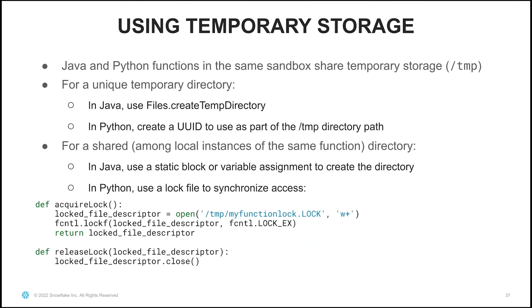Now a note on using temporary storage from Java and Python UDFs. As mentioned previously, the sandbox prevents local file system access, but we do allow access to temporary storage. If you want to have files for working content of your UDFs, you can write them to the temp directory. For Java UDFs, if you want a unique temporary directory, you can use Files.createTempDirectory. In Python, you can also create a temp directory, or create a UUID to use as part of the temp directory path. If you want a shared directory among local instances of the same function, in Java you can use a static block or variable assignment to create the directory. In Python, you can use a pattern with a lock file to synchronize access. I've defined a method called acquireLock that opens a file within the temp file system called myFunctionLock.lock. Once the lock is acquired, you can perform whatever initialization you want on the file system and then release it so other instances of the same UDF can proceed.